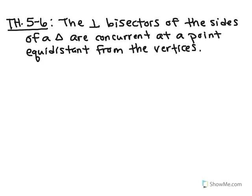Using these vocabulary words, we have another theorem in our book: theorem 5-6. It does not have a special name. Please put this theorem on your theorem and postulate chart. It says the perpendicular bisectors of the sides of a triangle are concurrent at a point equidistant from the vertices.